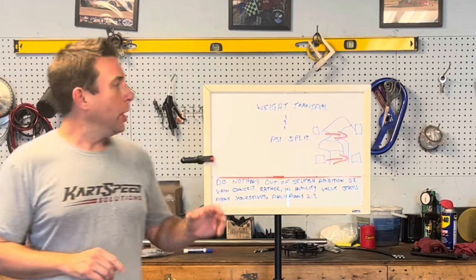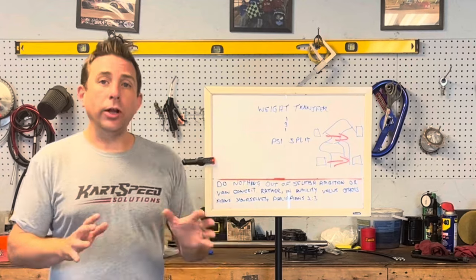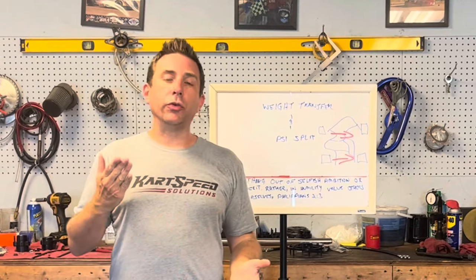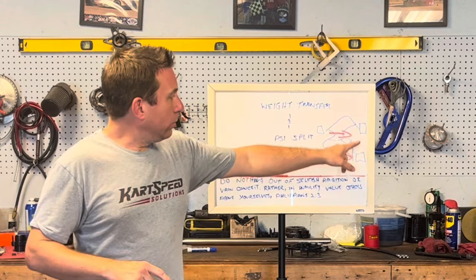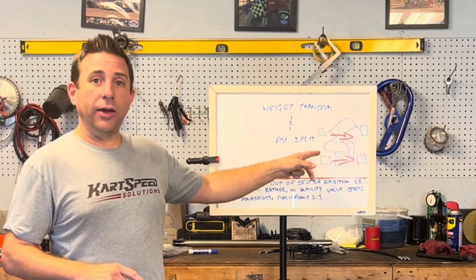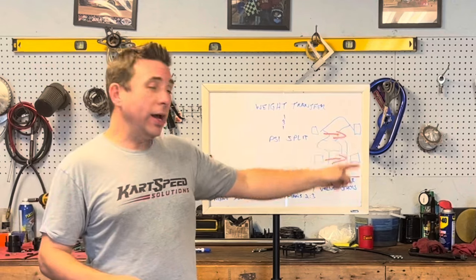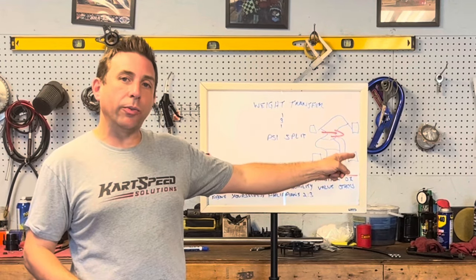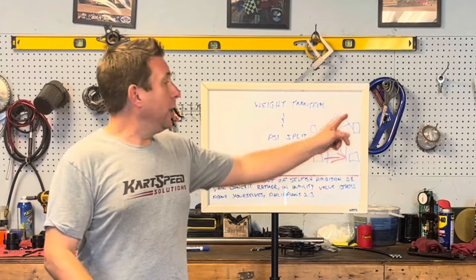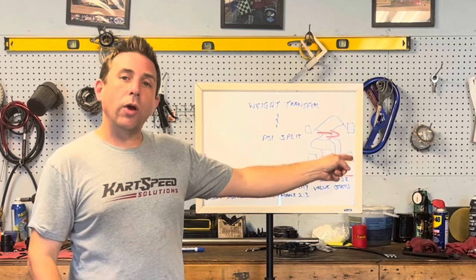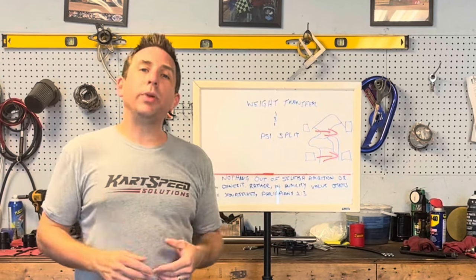It all has to do with weight transfer. The higher splits you run means there's more air in the right side tires than the left. If you're running a one-pound split, the right side tires have one more pound of air pressure than the left. If you're running a two-pound split, the right sides have two pounds more air than the left side tires.